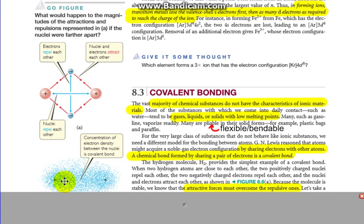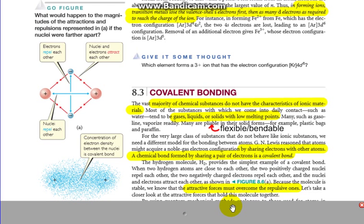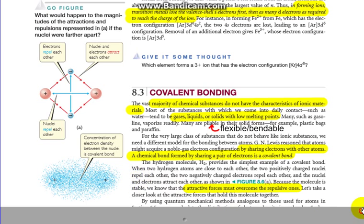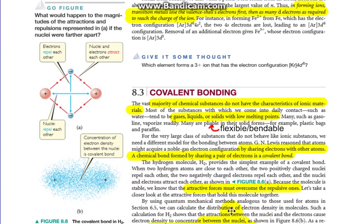There's a strong attraction between nuclei and the electrons that are in between the two. Because the molecule is stable, we know that the attractive forces must overcome any repulsive ones. We take a look at how this works by using a quantum mechanical model analogous to those used for atoms. We calculate the distribution of electron density of molecules. Such a calculation for H2 shows that the attractive forces between the nuclei and the electrons cause the electron density to concentrate between here.